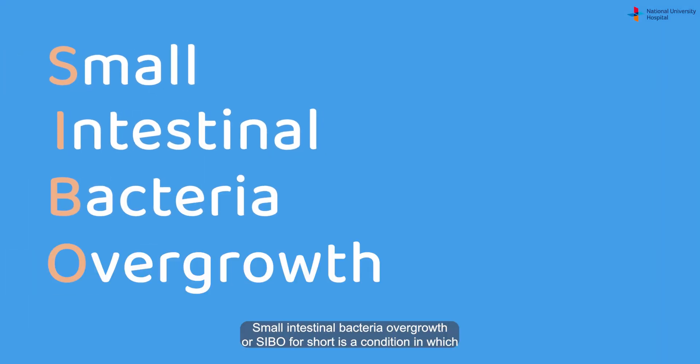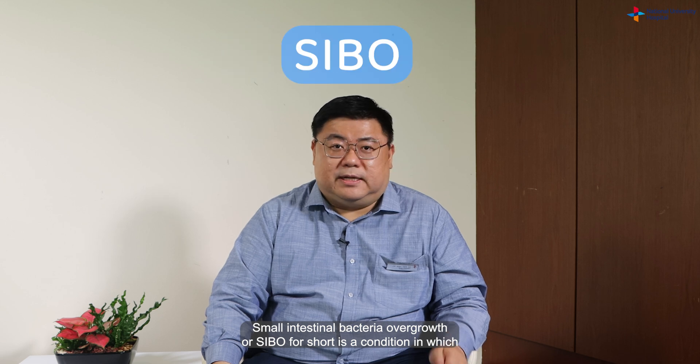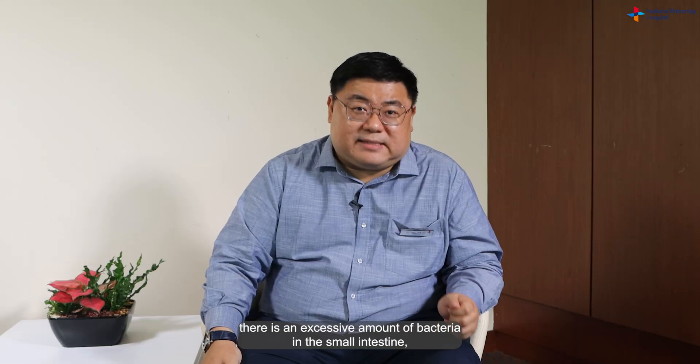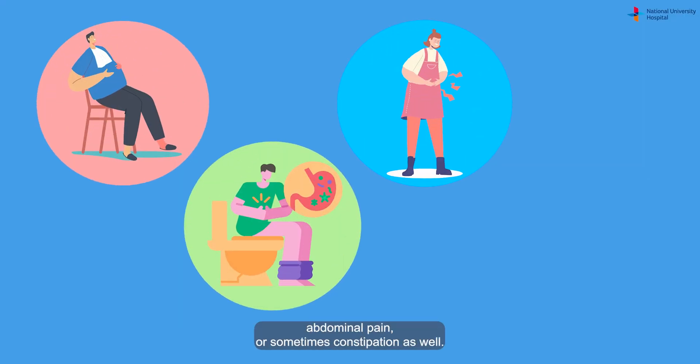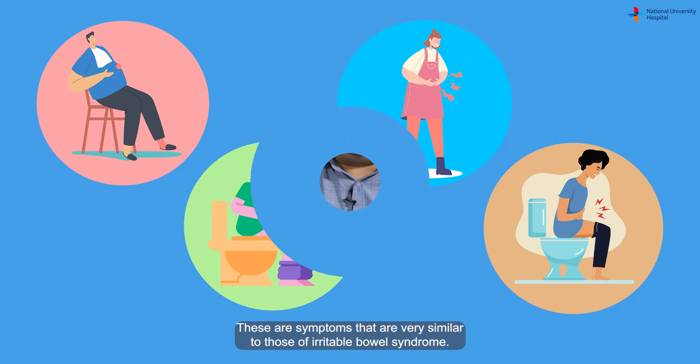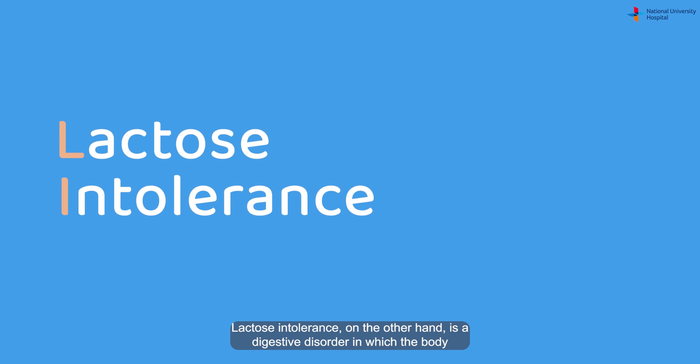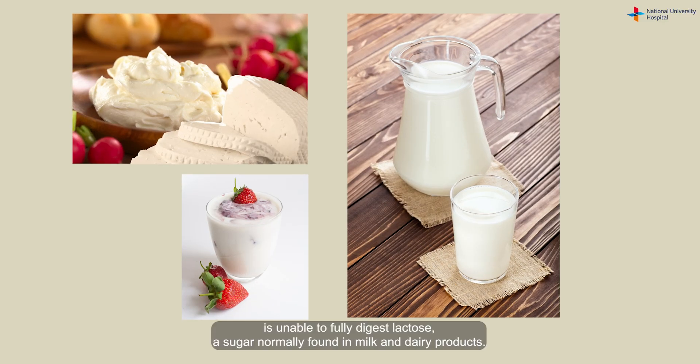Small intestinal bacterial overgrowth, or SIBO for short, is a condition in which there is an excessive amount of bacteria in the small intestine, leading to symptoms such as bloating, diarrhea, abdominal pain, or sometimes constipation as well. These are symptoms that are very similar to those of irritable bowel syndrome. Lactose intolerance, on the other hand, is a digestive disorder in which the body is unable to fully digest lactose, a sugar normally found in milk and dairy products. It is believed that SIBO and lactose intolerance may be contributing factors in some cases of IBS.